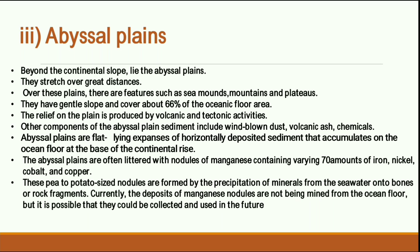Compounds found on abyssal plains include wind-blown dust, volcanic ash, and various chemicals deposited during large volcanic eruptions in the ocean. Abyssal plains are flat-lying expanses of horizontally deposited sediments that accumulate on the ocean floor at the base of the continental rise. All material coming down from the continental shelf or slope is deposited on the abyssal plains.